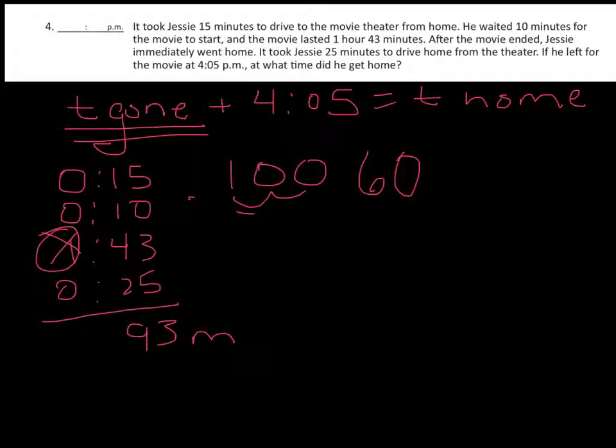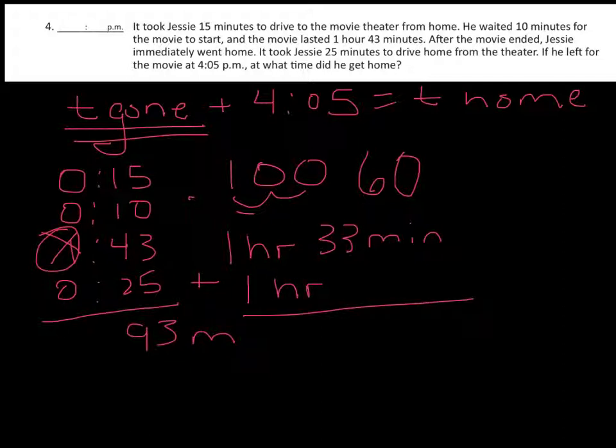And when we do this we have 93 minutes. So 93 minutes is actually one hour and 33 minutes. Now remember we have to add that to this hour that we didn't add in before. So you want to add that to your other hour. And that tells us the total amount of time he was gone is 2 hours and 33 minutes.